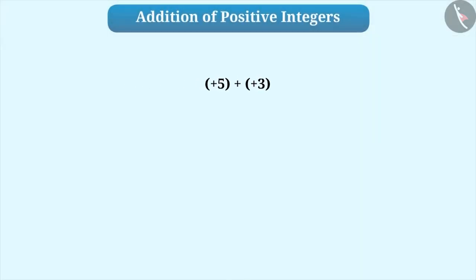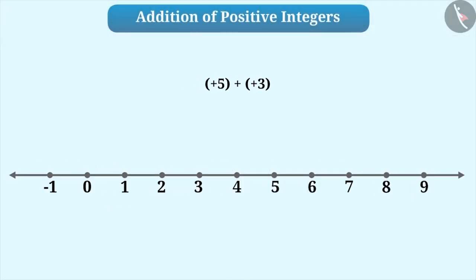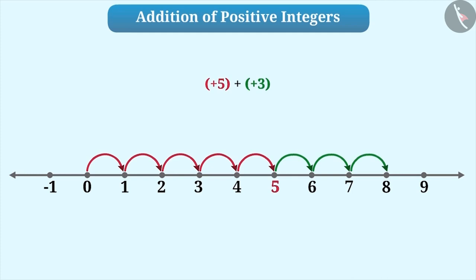For addition, first of all, draw a number line of integers. Here, +5 is the first integer. Since it is a positive integer, we move 5 places to the right of 0. By doing so, we reach +5. Now, the second integer is +3. Since it is also a positive integer, we move 3 places to the right of +5 and we reach +8, which is the result of +5 + +3.